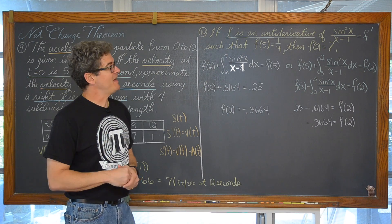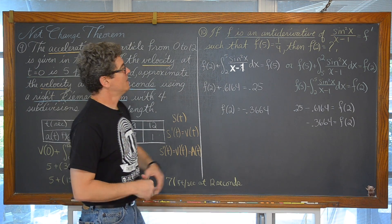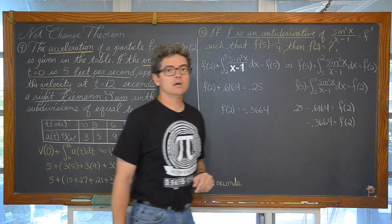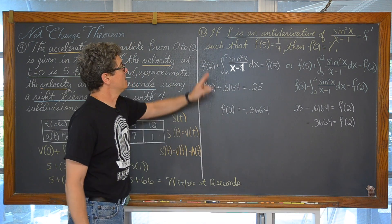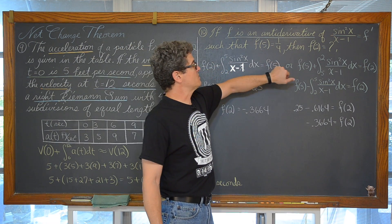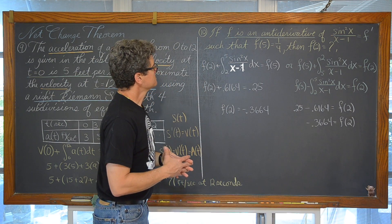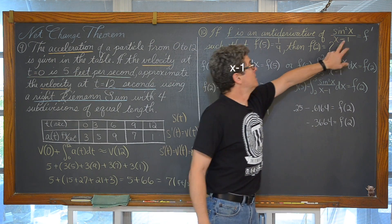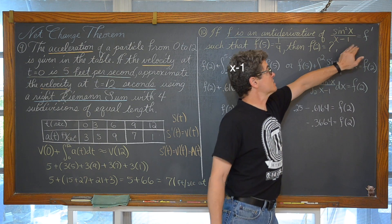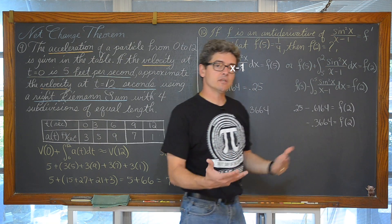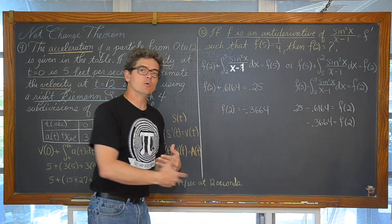So over here we have f is an anti-derivative of the sine squared of x over x minus 1 such that f of 5 is equal to 1 fourth and then f of 2 is equal to what? Well if f is the anti-derivative of this expression then this expression must be f prime. A derivative. And derivative gives us slope.